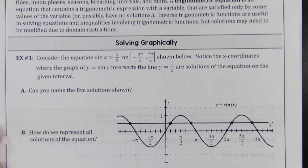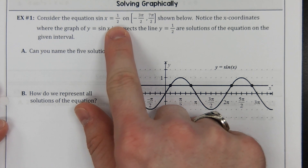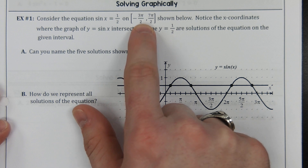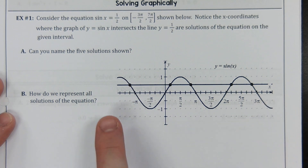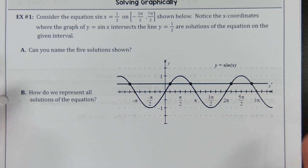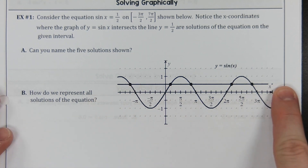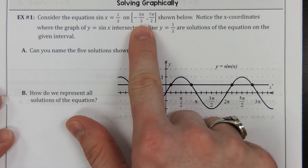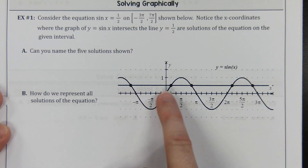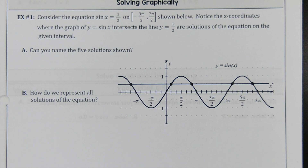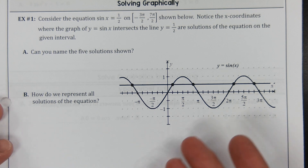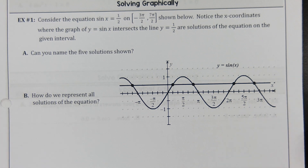The very first question asks us to solve the equation sine of x equals one half on a given domain. We have a graph below showing y equals sine of x and y equals one half. Solutions are the places where the graphs intersect each other. On this domain, hopefully you can see there are five solutions.